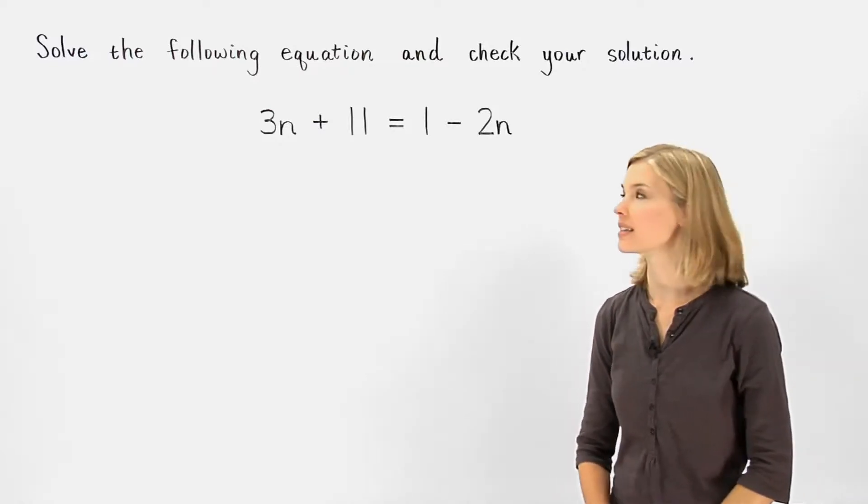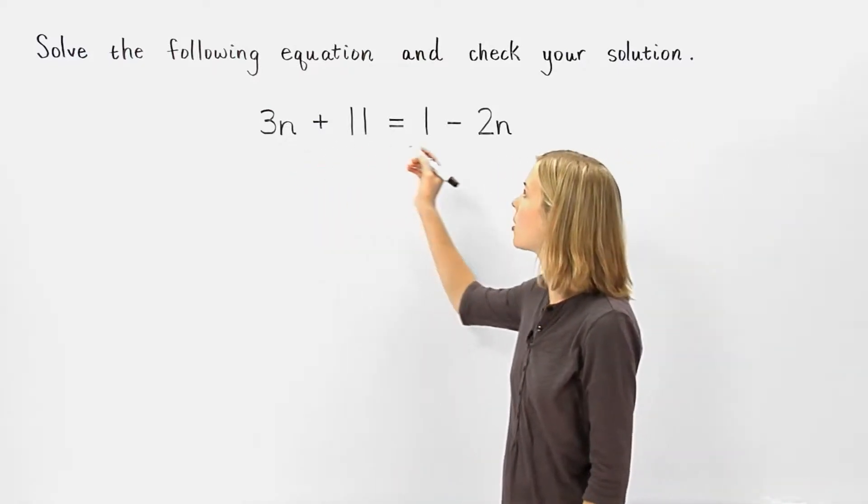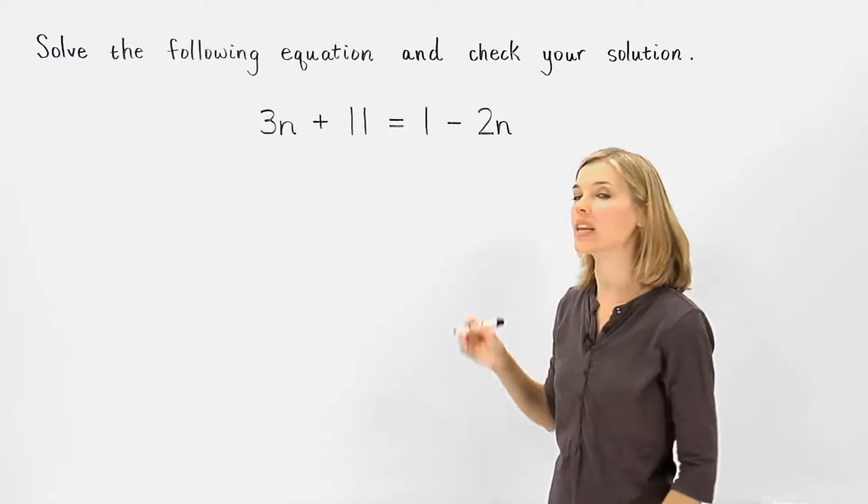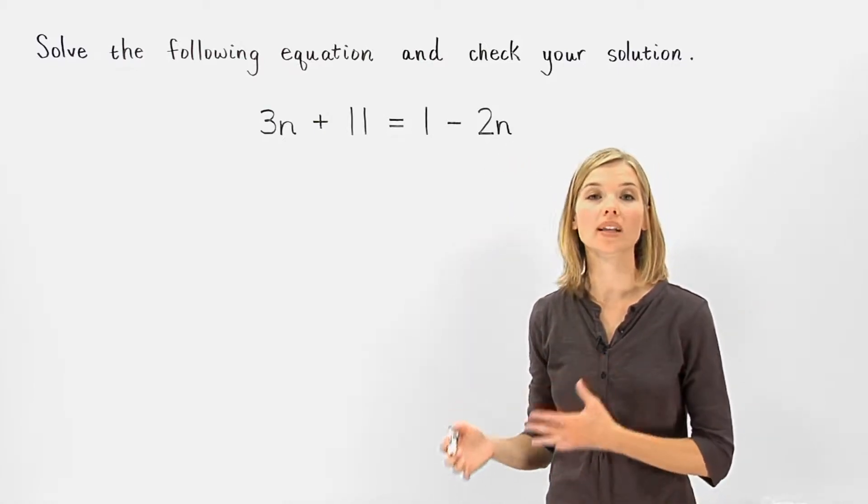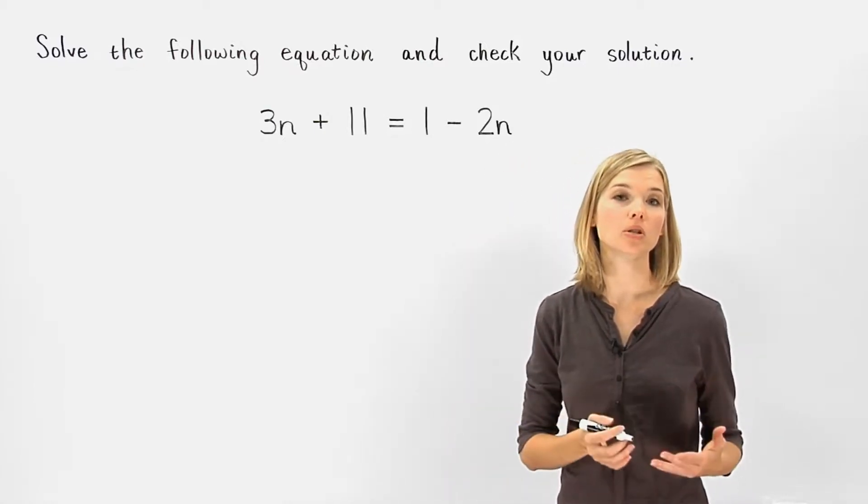To solve this equation, since our variable n is on both sides of the equation, we need to put our variables together on one side of the equation and our numbers together on the other.